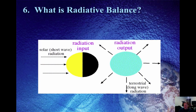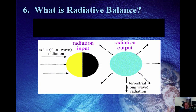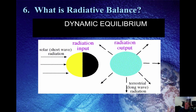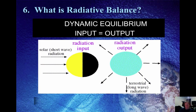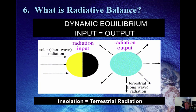Radiative balance. Just as it sounds — balance. Radiative balance is when the input of radiation equals the output of radiation, creating a dynamic equilibrium with insolation coming in and Earth re-radiating energy out. Another way to put this: insolation equals terrestrial radiation.